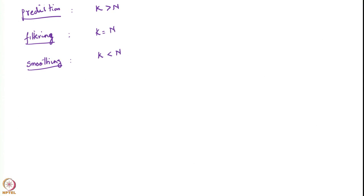The problem that concerns us in stochastic control problems with imperfect state information is the filtering problem. So this is the one we will concentrate on.